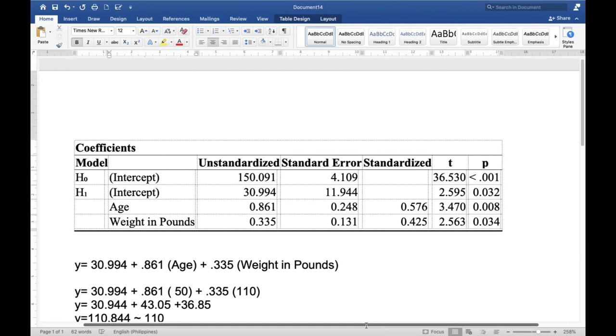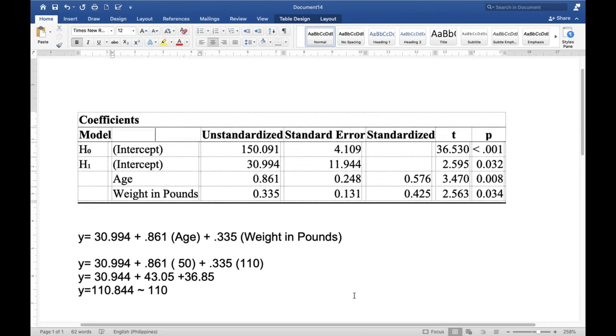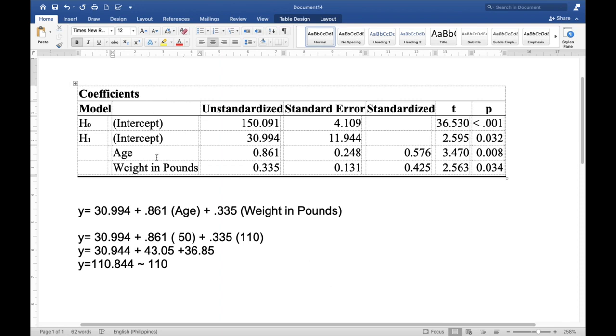So we have here a sample simulation on the result of the coefficients table. Let us first interpret what do you mean by this 0.861 and this 0.335.